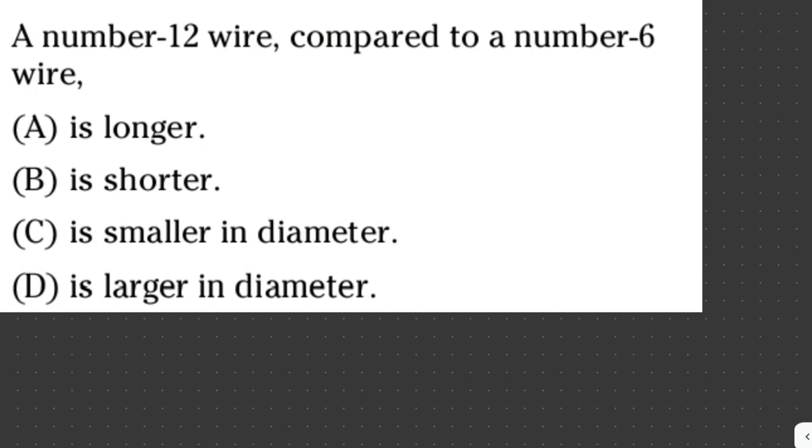A number 12 wire compared to a number 6 wire - A is longer, B is shorter, C is smaller in diameter, D is larger in diameter. In wires, the larger the number, the smaller the diameter of the wire. Therefore, the answer here is letter C, smaller in diameter. A number 12 wire has a smaller diameter compared to wire number 6.